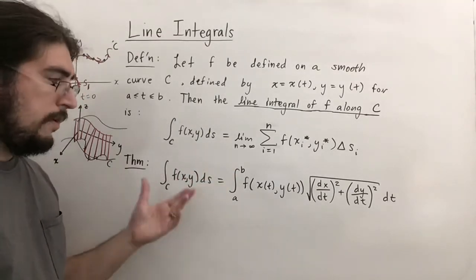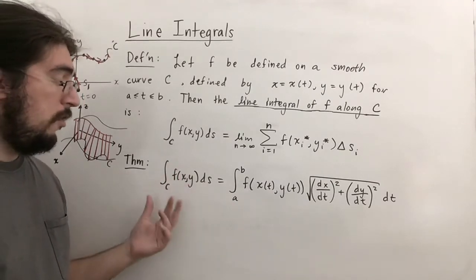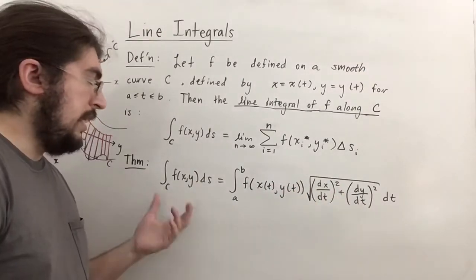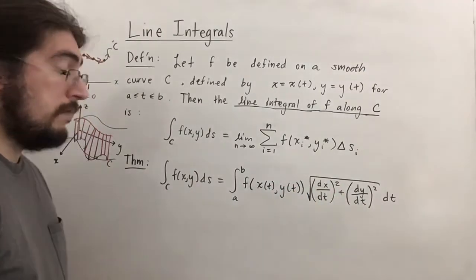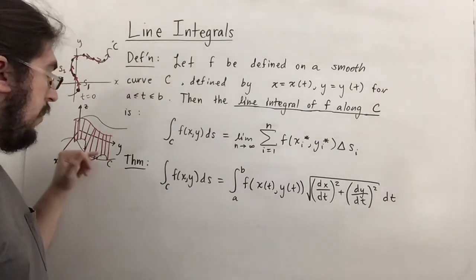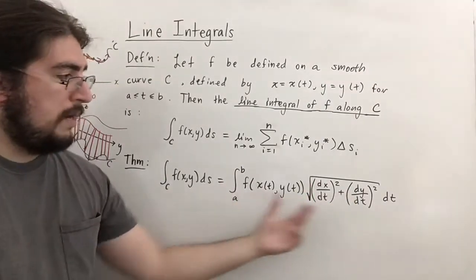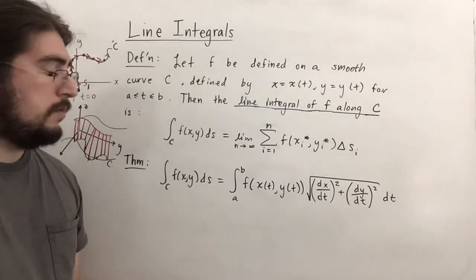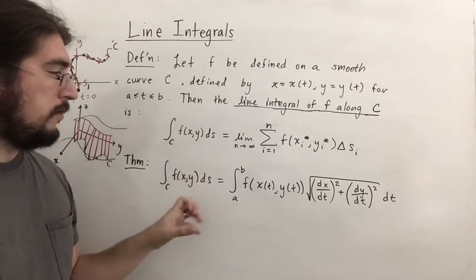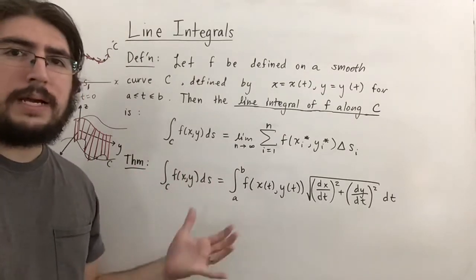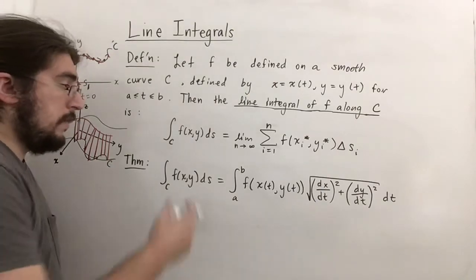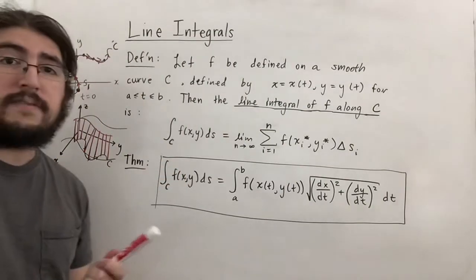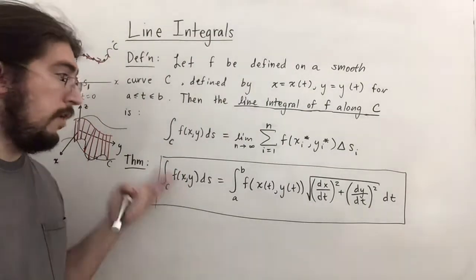There's a theorem that says the line integral of f over c can be written as the integral from a to b, using the arc length formula for c. So it's the integral from a to b of f of x of t, y of t, times the radical expression. I won't prove it because it takes too long, but we'll use it in examples right now, and then look at a nice consequence from all of this.